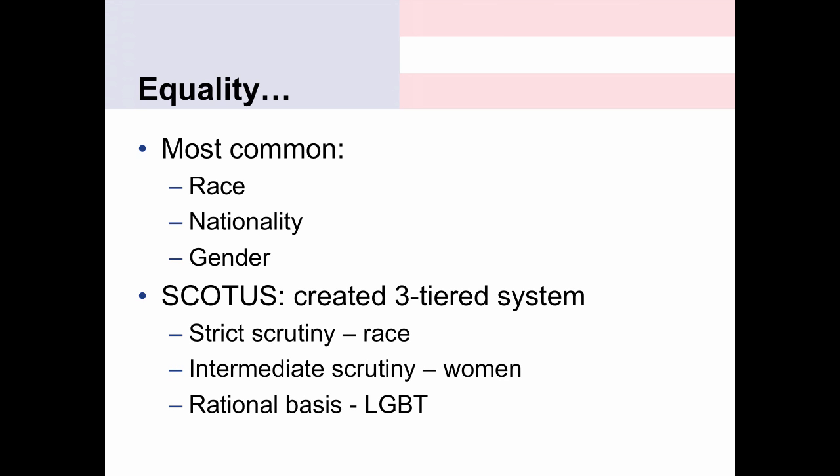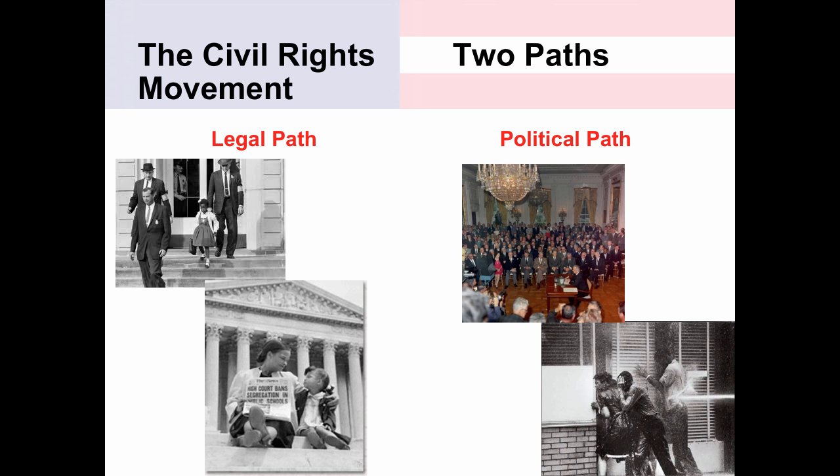The highest level of scrutiny is strict scrutiny, which the Supreme Court usually reserves for racial discrimination. There's intermediate scrutiny, which applies to gender discrimination. And then there's rational basis, which applies to LGBT-based discrimination. Why are there different levels of scrutiny? It's something that would take a long time to explain, and it's an ongoing debate — so we're going to bypass it to get straight to the core of the material.